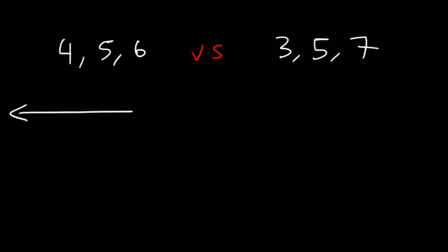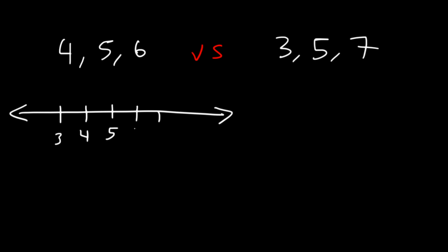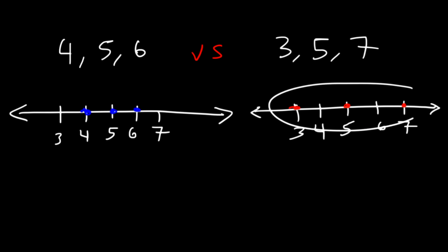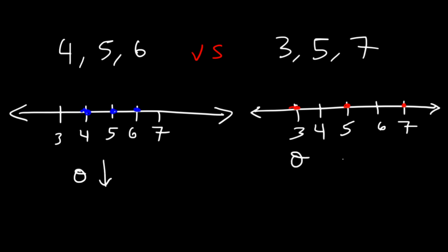You can tell if we plot them on a number line. Let's put 5 in the middle. Here are 4, 5, and 6 on a number line. In contrast, let's put 3, 5, and 7 on the same number line. If you look at the red points, they're further apart. The points in blue are very close together. Therefore, 4, 5, and 6 has a lower standard deviation than 3, 5, and 7 — sigma is low for the blue set and high for the red set.